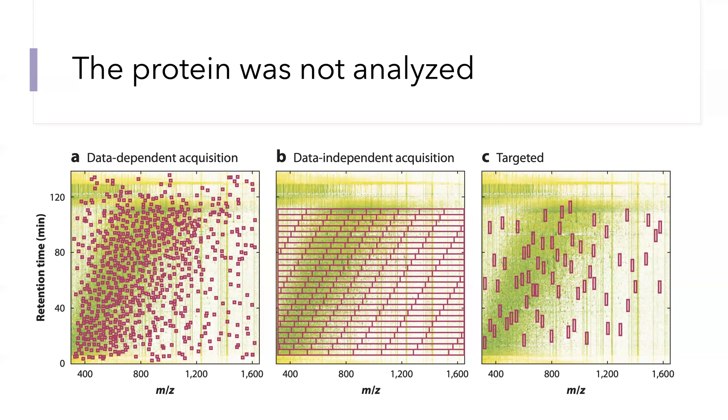The algorithms prioritize ions for analysis based on their abundance, so highly abundant ions are less likely to be missed. They're more likely to be sampled. In addition to the stochasticity of the missing data, there is also an abundance dependent component.